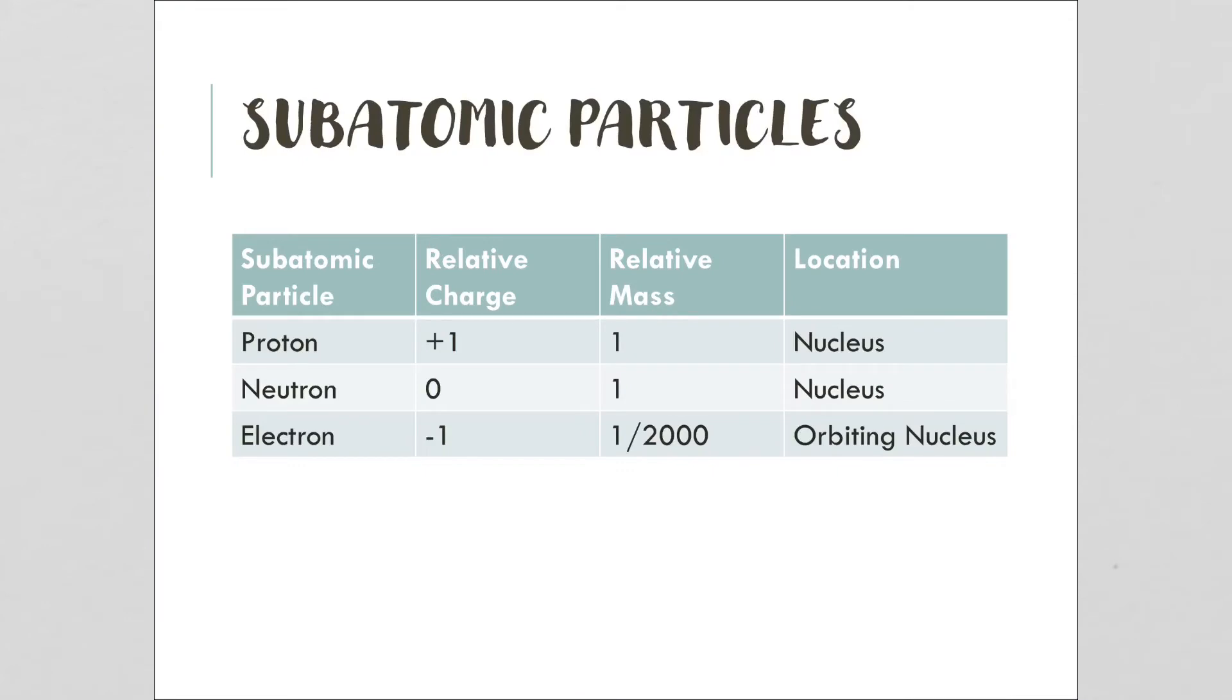There are three subatomic particles. Two of them are found in the nucleus, and the third one is found surrounding the nucleus. The first one, protons, has a relative charge of plus one. Every proton has a positive charge with a factor of one. Its relative mass is also one in comparison to neutrons and electrons, and you find them in the nucleus.